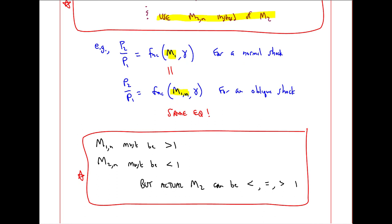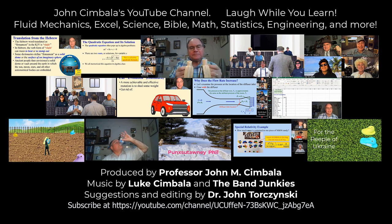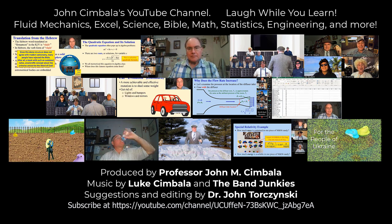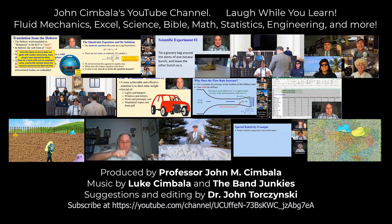Since we've transformed into a normal shock by rotating and moving, we must have M1N greater than 1, and we must have M2N less than 1. A shock still must go from supersonic to subsonic flow, even if it's oblique. But for an oblique shock, the actual M2 can be less than, equal to, or greater than 1. Thank you for watching this video. Please subscribe to my YouTube channel for more videos.